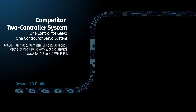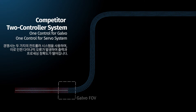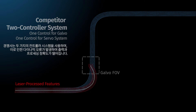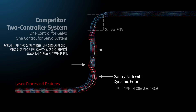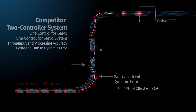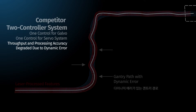Competitive IFOV solutions use two controllers — one for the galvo and one for the servo system. This makes it impossible to implement real-time correction of the dynamic errors inherent in servo systems. As a result, throughput and processing accuracy are degraded due to included servo dynamic error on the part.